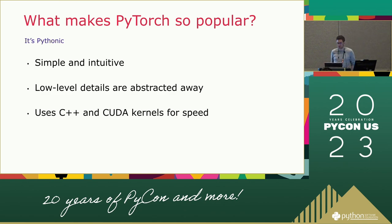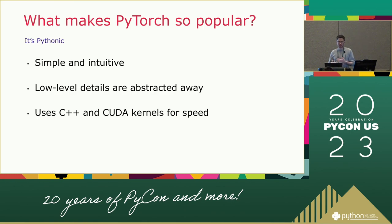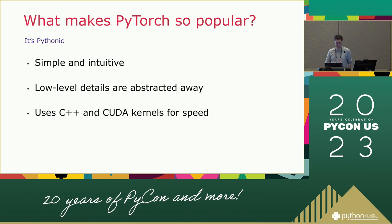Another important reason for PyTorch's popularity is that it tries to achieve a Goldilocks balance between abstracting away low-level details that you don't really care about but still providing an API that's rich enough to let you do things that might be slightly off the beaten path. And finally, it's important that PyTorch is performant. Under the hood, it uses kernels implemented in C++ and CUDA to run on GPUs so that the neural networks you train and run in PyTorch run efficiently.